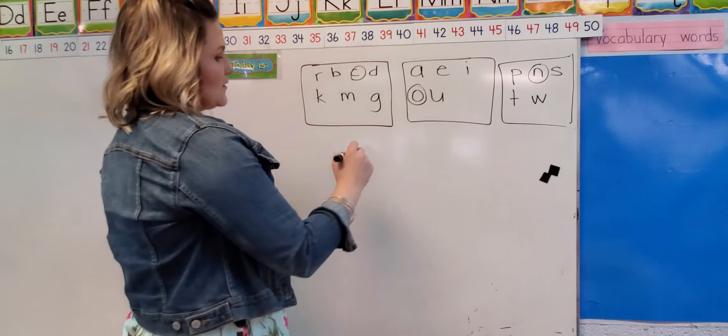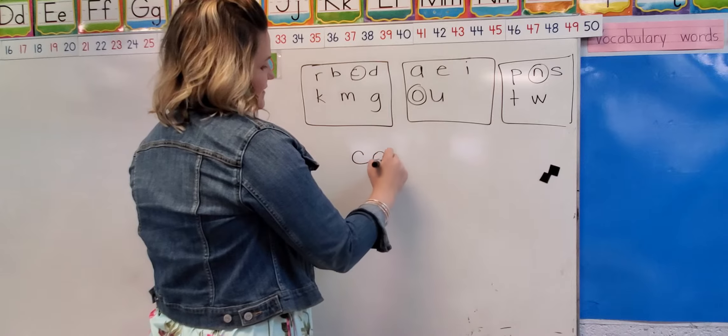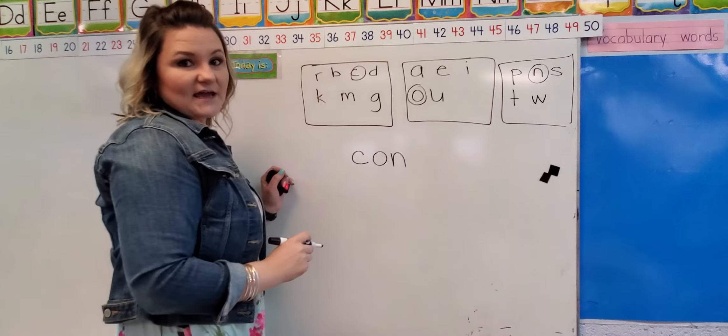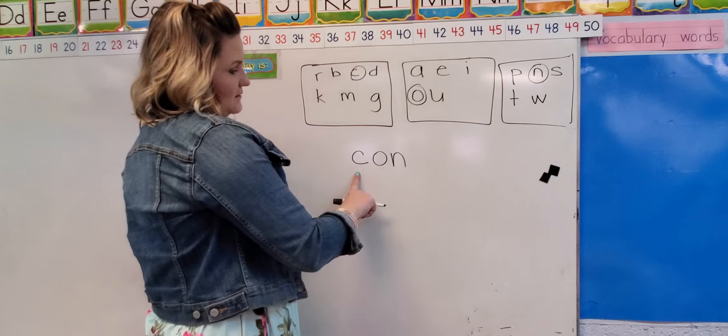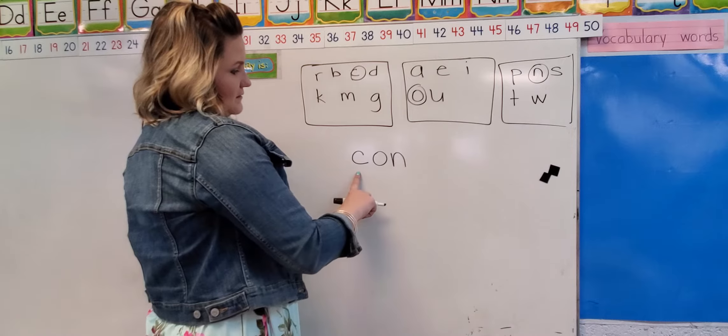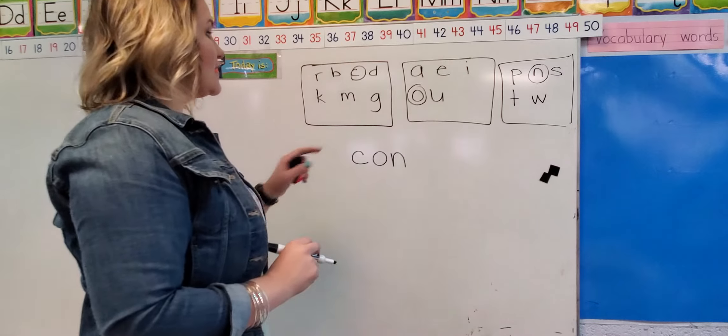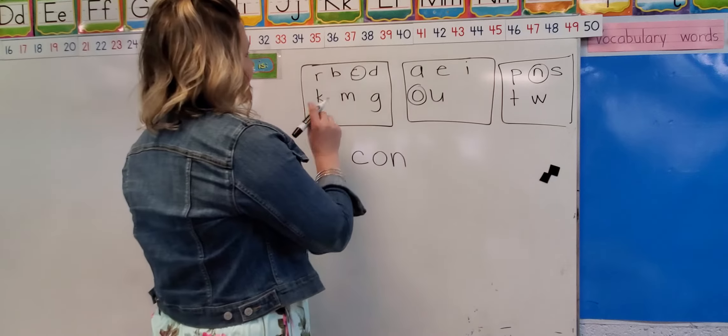So I'm going to write this word and then I'm going to blend it together. K, O, N. K, O, N. Con. That word is con.